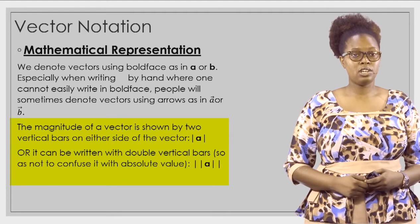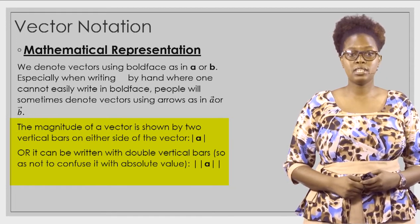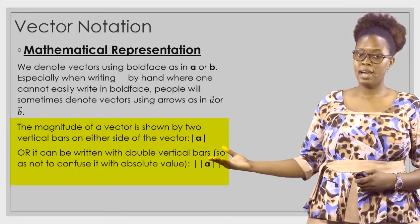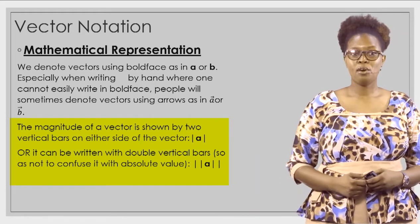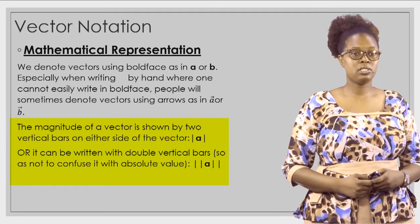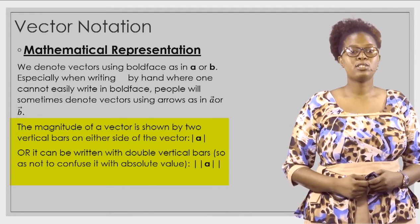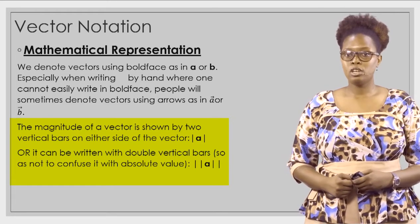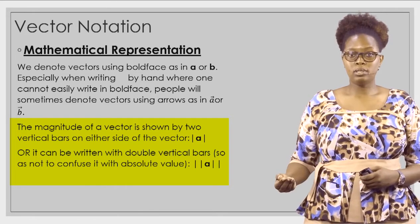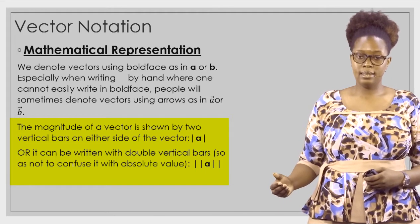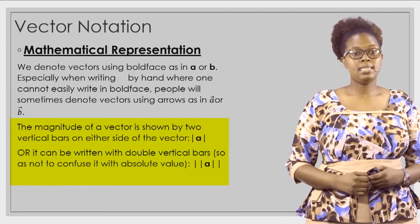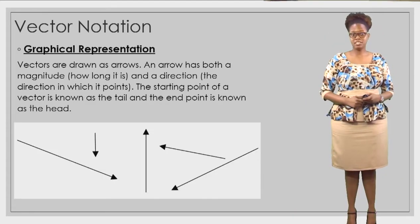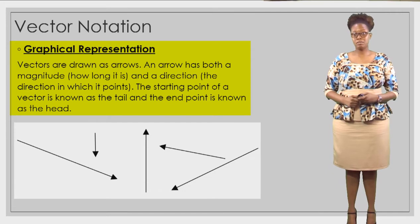The magnitude of a vector is shown by two vertical bars on either side of the vector. It can also be written with double vertical bars so as not to confuse it with absolute value. So as long as you see a bold letter with two bars on either end, that represents the magnitude of a vector.